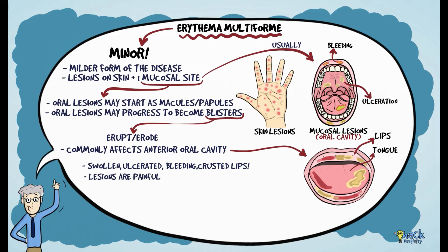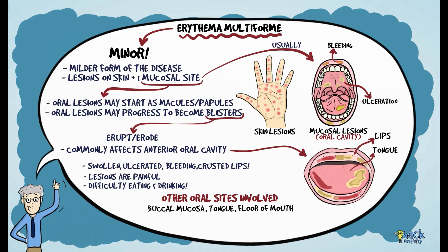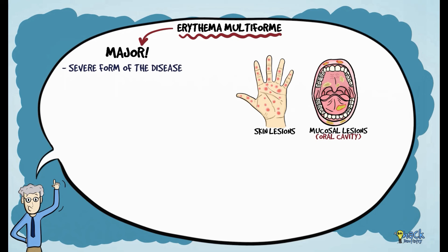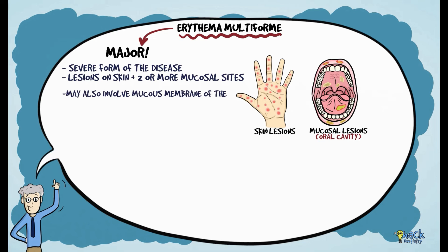Oral lesions are very painful and patients have difficulty eating and drinking. Ulceration is usually diffuse, affecting the buccal mucosa, tongue, floor of the mouth, and soft palate. Erythema multiforme major has similar skin and oral manifestations as the minor form, except that lesions are more widespread and may involve two or more mucosal sites, additionally including laryngeal, esophageal, genital, or ocular mucous membranes.